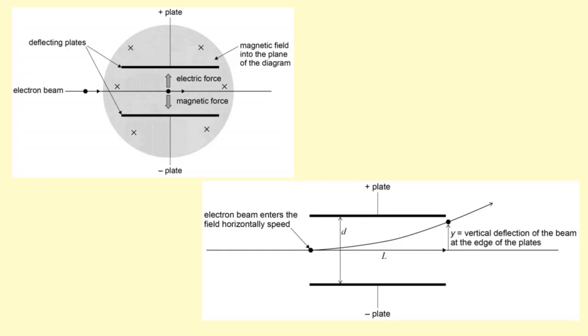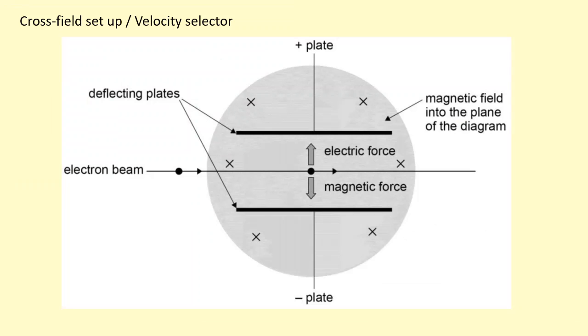We're going to use these two setups to find the specific charge of an electron. The top one has an electric field and a magnetic field, and the second one has an electric field only.